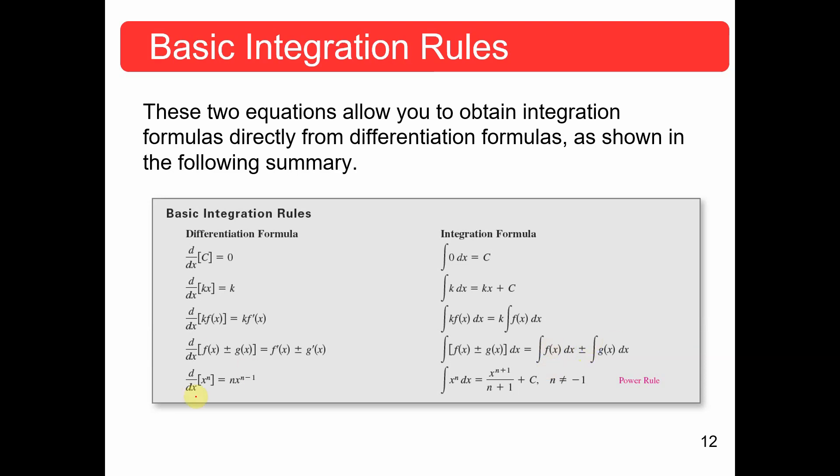Here is your most important non-trig related differentiation formula: n times x to the n minus one. We take the n out front and subtract by one. To undo this through integration, we add one and divide by that number to get rid of the n. So the integral of x to the n: we add one to the exponent, and then divide by that new number.